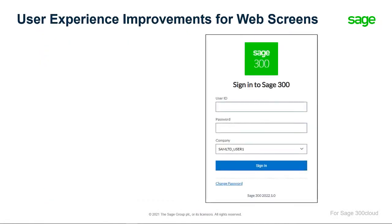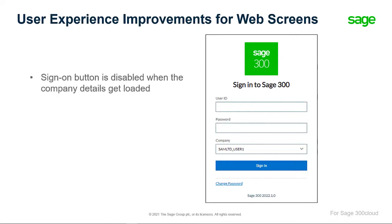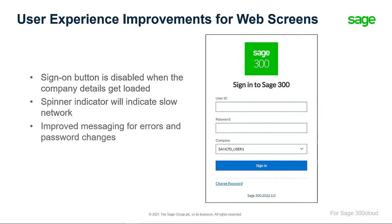The web screen's sign-on page has significantly improved to be more consistent with the other Sage solutions. Some of these changes include the sign-on button being disabled while the company details get loaded, a spinner indicating that a network is slow, and improved messaging for errors and password changes.